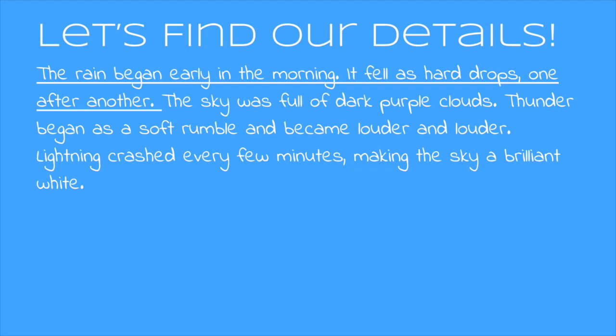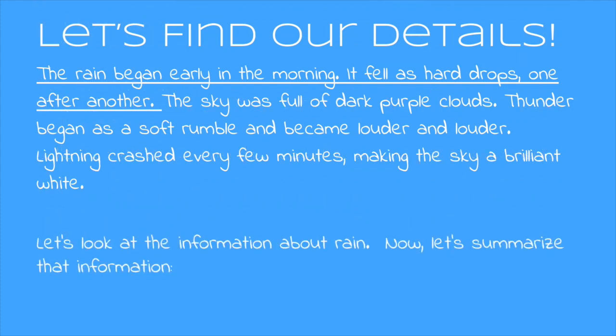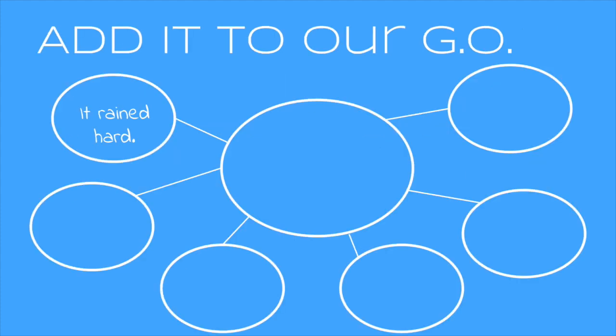I underlined all of the information about rain. Now we need to summarize it into just a short sentence that is in our own words. How about, it rained hard. That summarizes both of these sentences together. See, the rain began early in the morning. It fell as hard drops, one after another. Together, these sentences are really just saying that it rained hard. So let's add it to our graphic organizer.